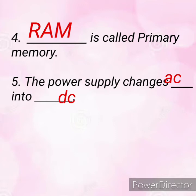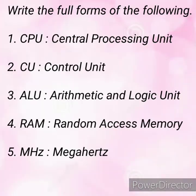Question five: the power supply changes dash into dash. The answer is AC into DC — AC means Alternating Current and DC is Direct Current.